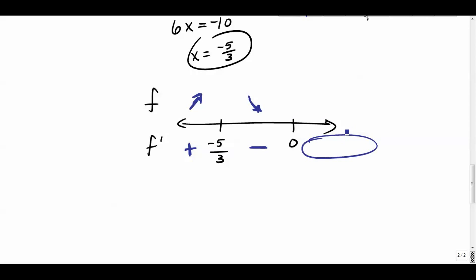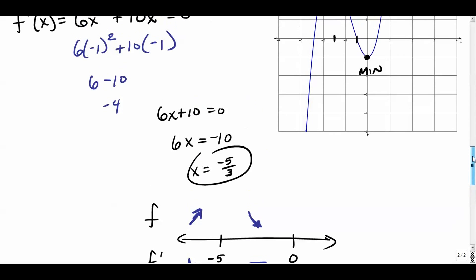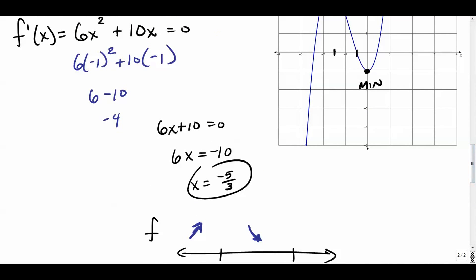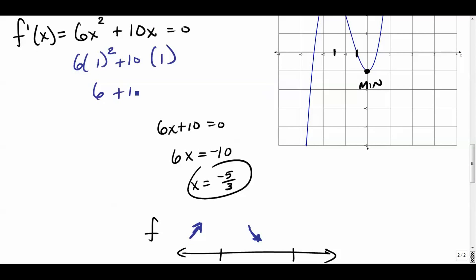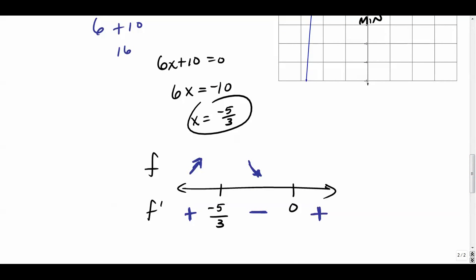To the right of zero, test x equals one: six plus ten equals sixteen, which is positive. So the function goes back uphill after zero. When the graph goes from up to down, that's a max; when it goes from down to up, that's a min.